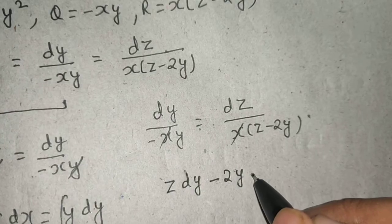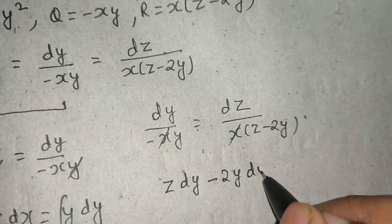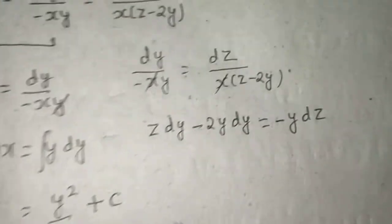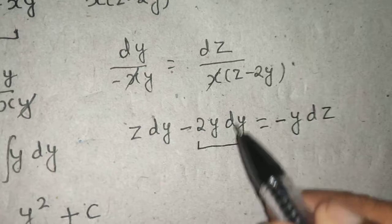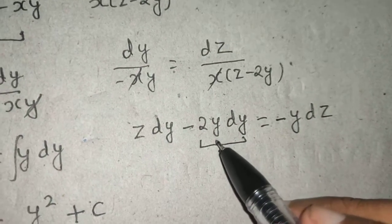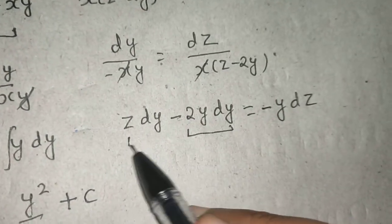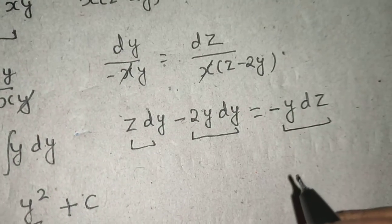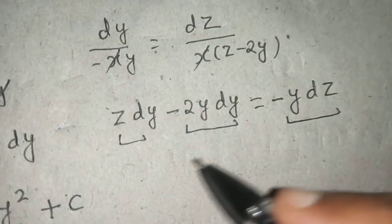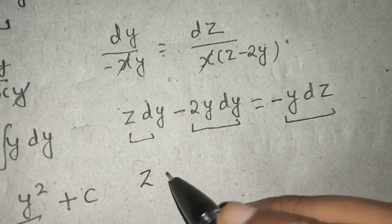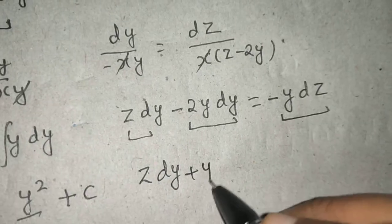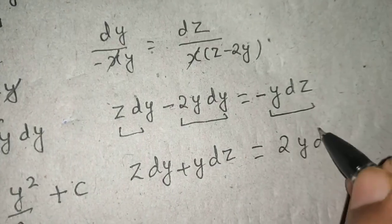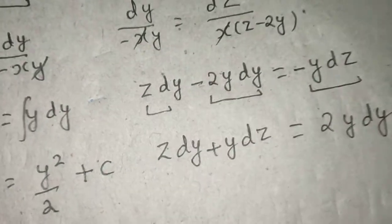Now what I can do is just cross multiply. It's not looking good for me except for this term, because this term I can integrate easily. So let's collect the not-so-good-looking terms aside: z dy + y dz, and let's take the good term to the other side: 2y dy.